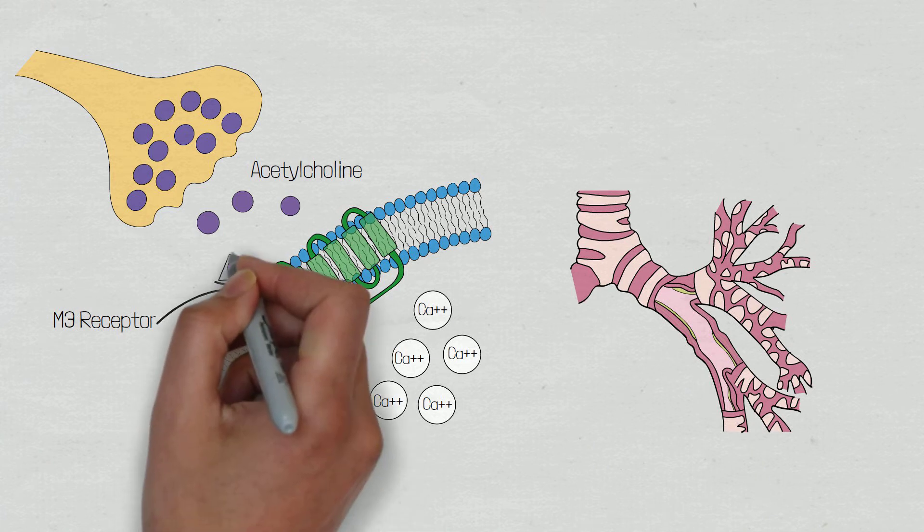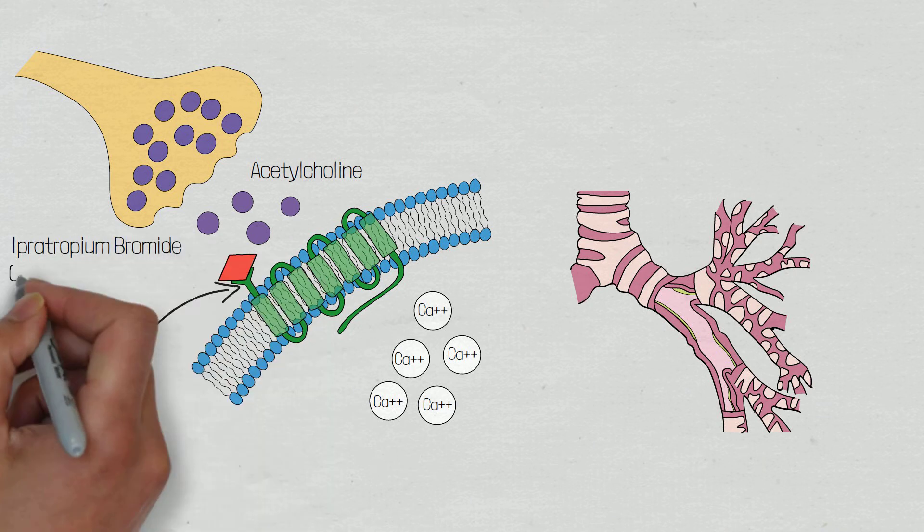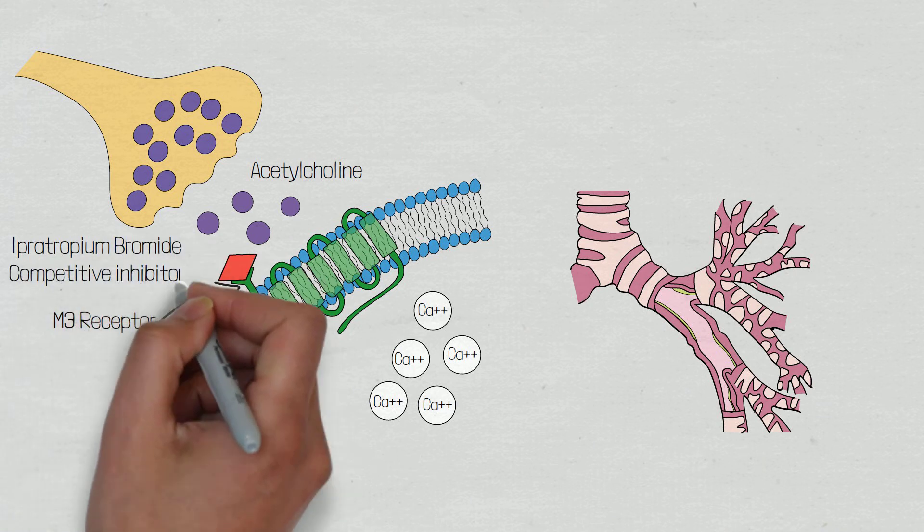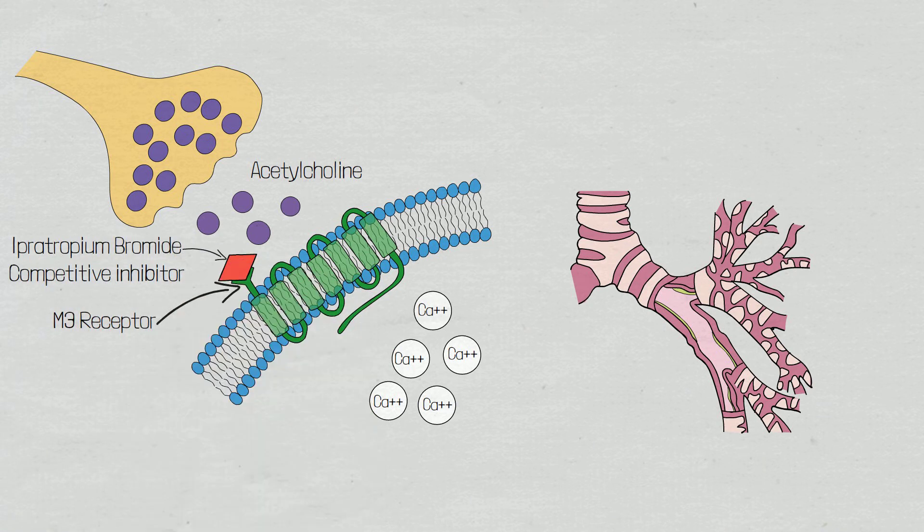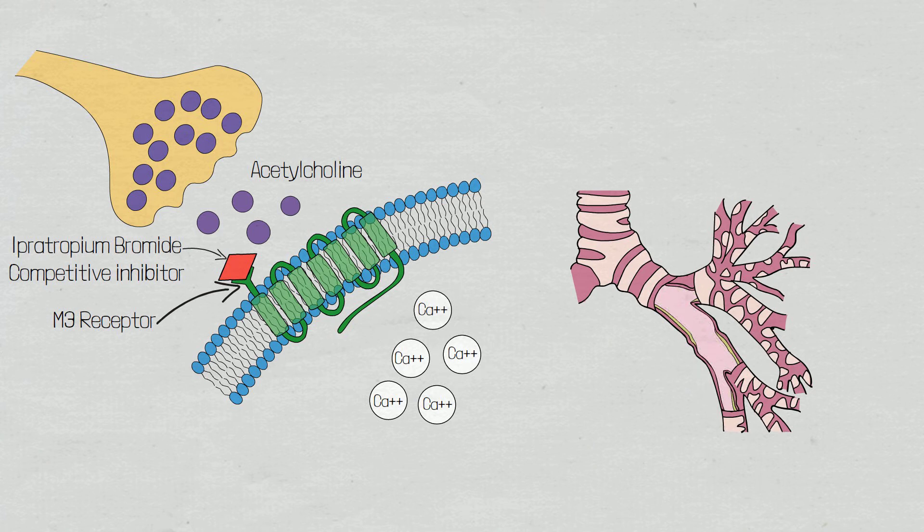Ipratropium bromide is a competitive inhibitor of acetylcholine, binding to the muscarinic type 3 receptor and inhibiting acetylcholine from exerting an effect. This will then lead to relaxation of bronchial smooth muscle, leading to increased airway diameter and easier passage of air, making it easier to breathe.